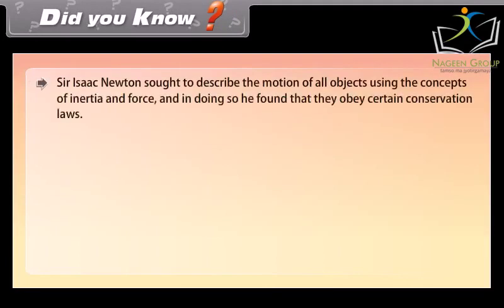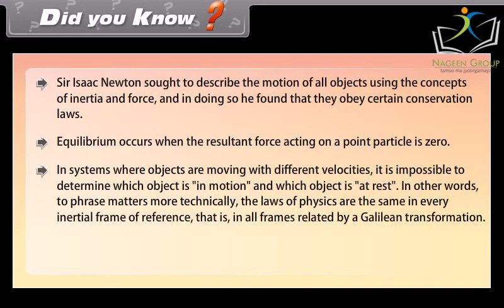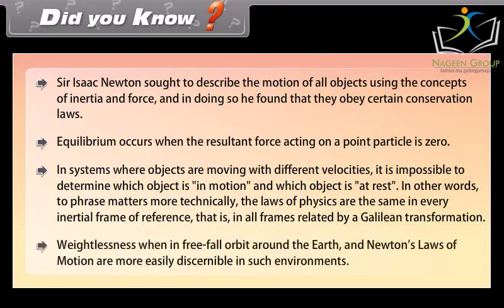Did you know: Sir Isaac Newton sought to describe the motion of all objects using the concepts of inertia and force, and in doing so, he found that they obey certain conservation laws. Equilibrium occurs when the resultant force acting on a point particle is zero. In systems where objects are moving with different velocities, it is impossible to determine which object is in motion and which object is at rest. The laws of physics are the same in every inertial frame of reference. Weightlessness when in free fall orbit around the earth and Newton's law of motion are more easily discernible in such environments.